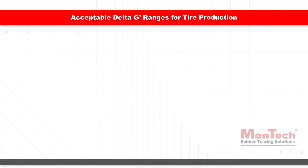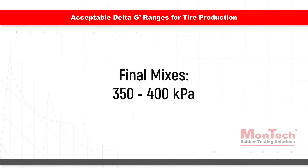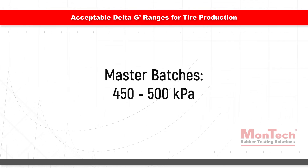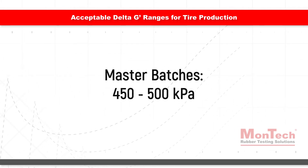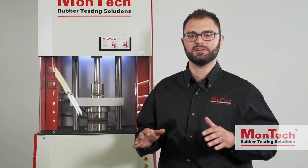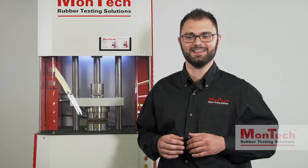For tire production, a Delta G' prime value between 350 and 400 kilopascals is an acceptable range for final mixes, or between 450 and 500 kilopascals for master batches. Results within this range indicate good filler-filler interaction and silanization.